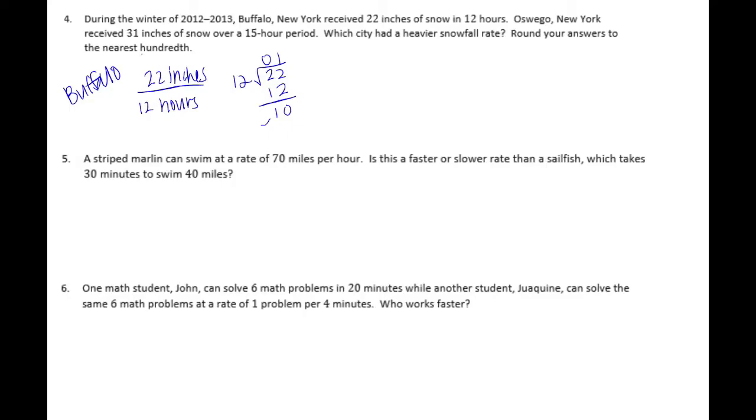12 can only go in once. Now it wants us to round our answers to the nearest hundredth, so I'm going to put my decimal point down and bring down a zero. 12 can go into 100, let's see, 12 times 8 is 96, so it can go in 8 times. Put a zero down and keep going. 12 goes into 40 three times, 3 times 12 is 36. I'll put another zero down because I'm rounding to the hundredths place, which means I need to go to the thousandths place. So 12 goes into 40 three times. We get 1.833 thousandths, but I need to round to the hundredths place, so 1.83 inches per hour for Buffalo.